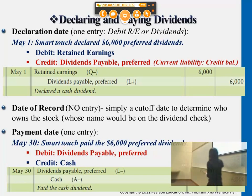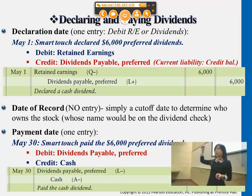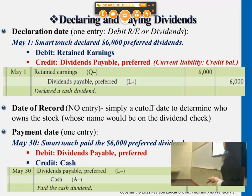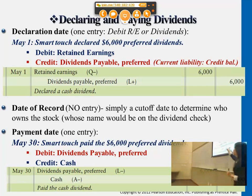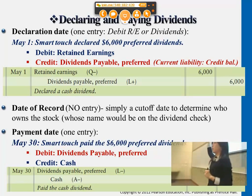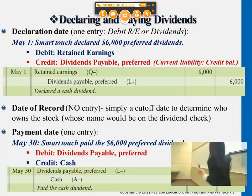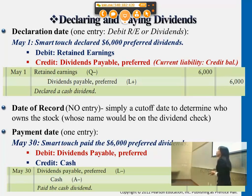Some companies do it one way; other companies do it another way. They have one journal entry on the declaration date and then another journal entry when it actually comes to payment. You see this as a dividends payable liability reduction because earlier a dividends payable was created when the company declared the dividends. So some companies do just one journal entry at payment date, while others do two.